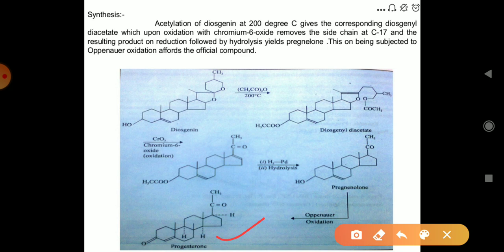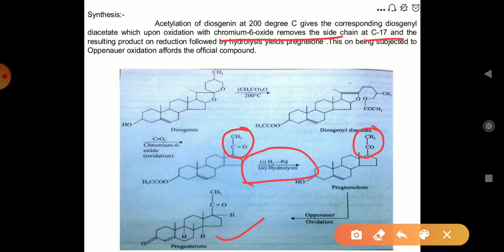At the C-17 position, the side chain present on the C-17 position undergoes oxidation. Chromium trioxide removes the side chain of the C-17 carbon, resulting in a reduced form by hydrolysis which yields progesterone. You can see the side chain present on C-17 carbon is reduced in the presence of H2/Pd and hydrolysis. This is the method for the synthesis of progesterone.